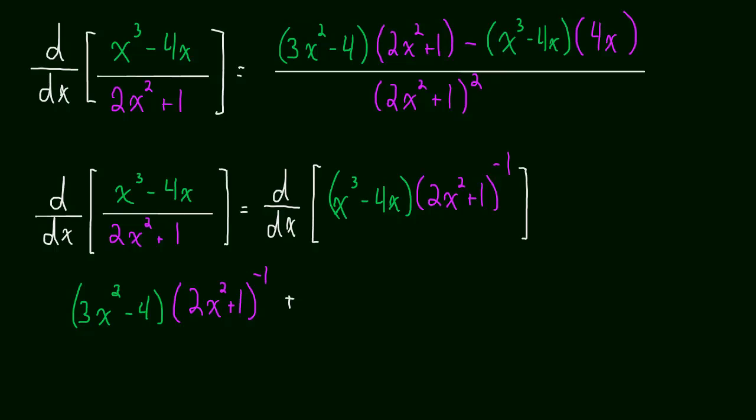and now we leave the first term alone. So, that's x cubed minus 4x. And we take the derivative of the second term.